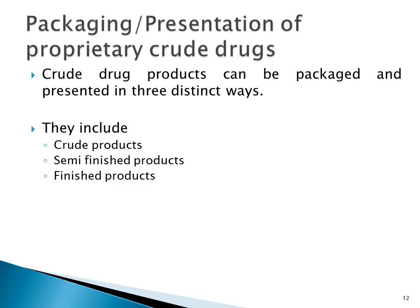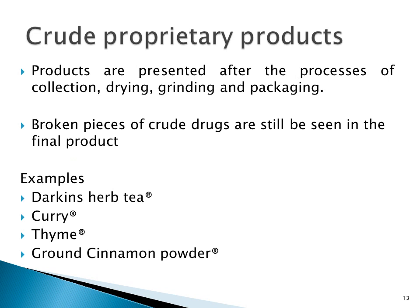The packaging or presentations in which these products can be found include crude products, semi-finished products, and finished products. Crude proprietary products are presented following collection, drying, grinding, and packaging, and broken pieces of the crude drug may still be seen in the final product. Typical examples are Dequin's Hemp Tea obtained from the Senna plant — the dried leaves of Senna are dried, broken, and packaged — as well as curry, thyme, and ground cinnamon powder.